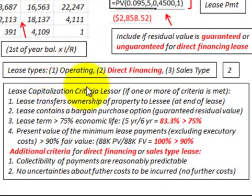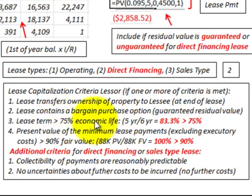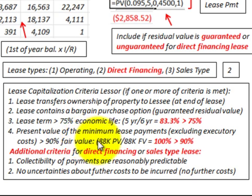We have three types of leases: operating, direct financing, and sales-type. For lease capitalization criteria for the lessor, if one or more criteria is met: the lease transfers ownership to the lessee at end of lease; the lease contains a bargain purchase option or guaranteed residual value; the lease term is greater than 75% of economic life — here it's 5/6 years = 83%, which exceeds 75%; or the present value of minimum lease payments excluding executory costs is greater than 90% of fair value — here $88,000/$88,000 = 100%, which exceeds 90%.